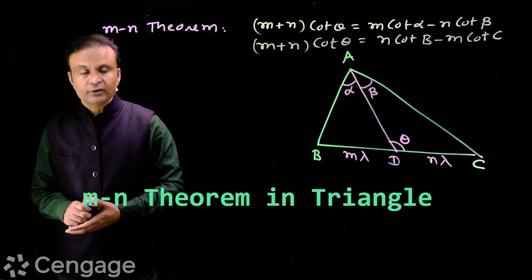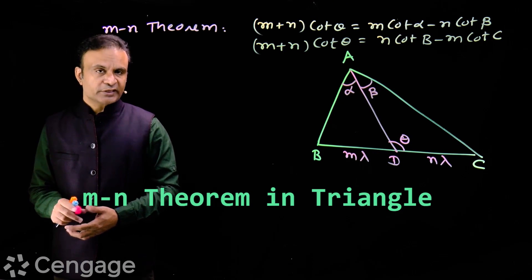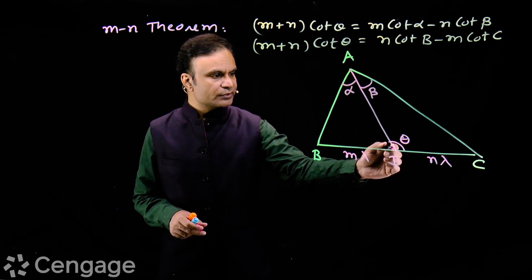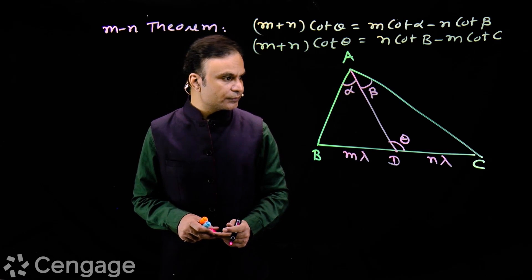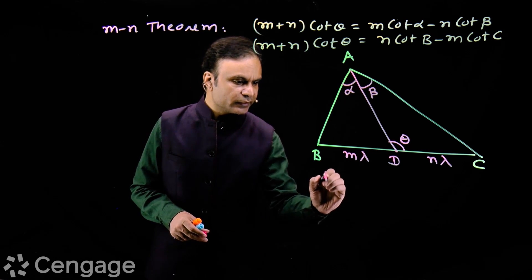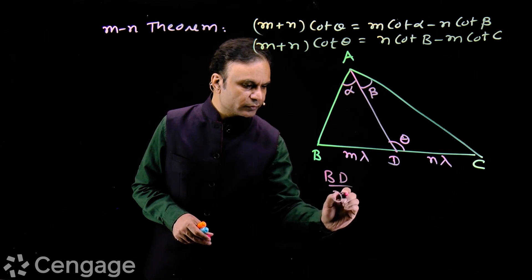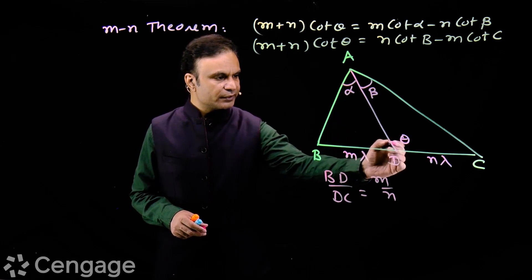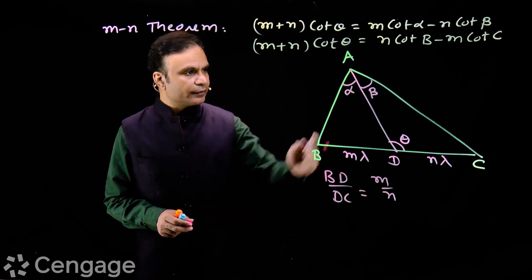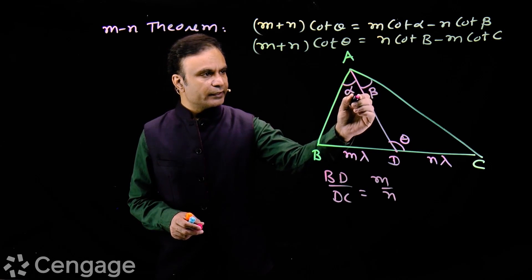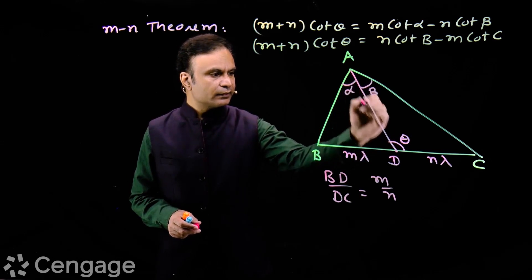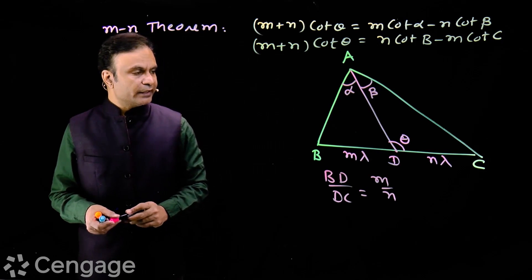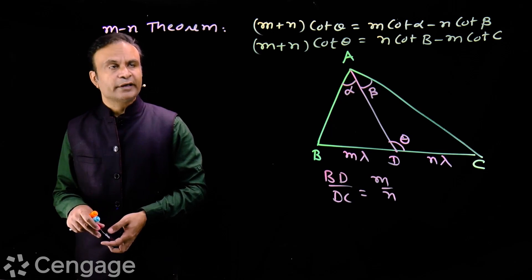We have the MN theorem for a triangle. We have triangle ABC, and a line through vertex A meets the opposite side BC at point D. D divides BC in the ratio m to n, where BD to DC equals m to n. The angle between the line and BC is theta, and the line divides angle A such that angle BAD is alpha and angle DAC is beta.